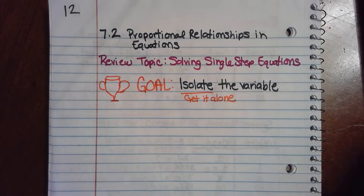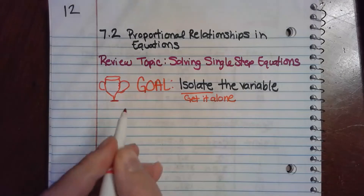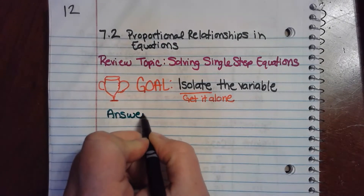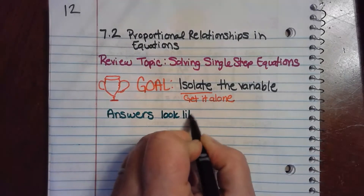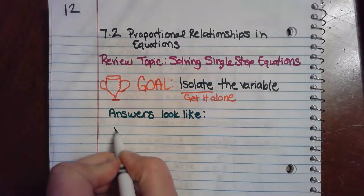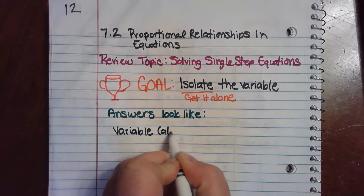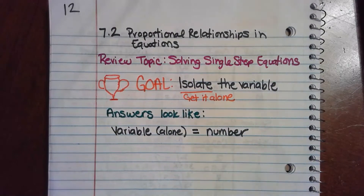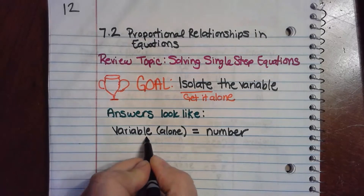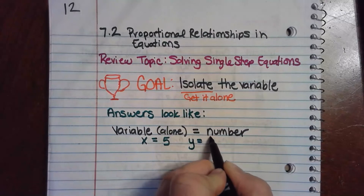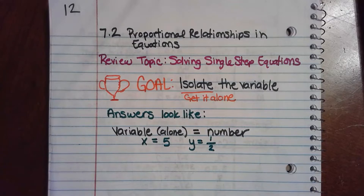So we want the variable on one side and a number on the other side. The answers to these types of problems are going to look like: on one side you have the variable alone, then the equal sign, then a number. For example, you might have x equals 5, or y equals one half — it doesn't have to be a whole number, it can be any number.